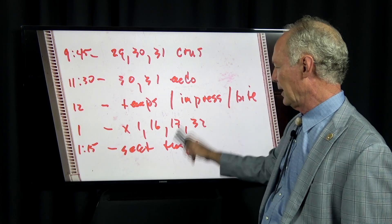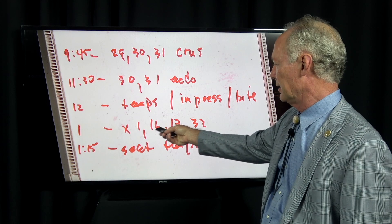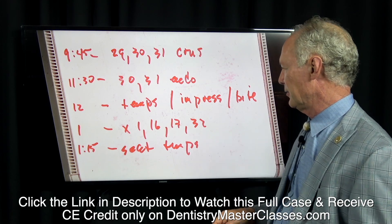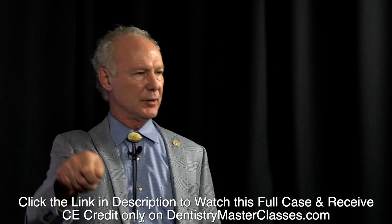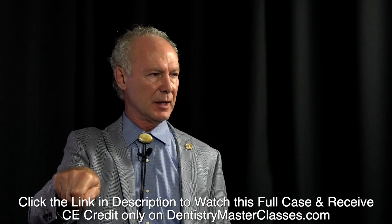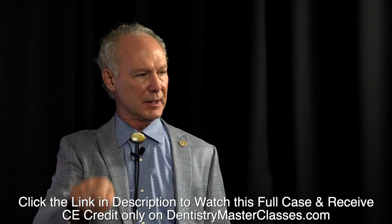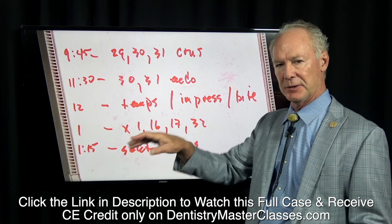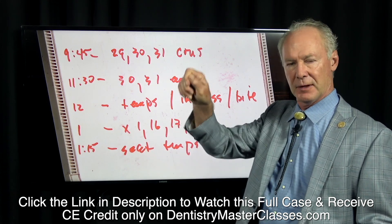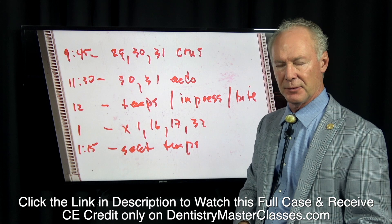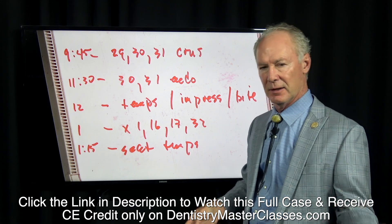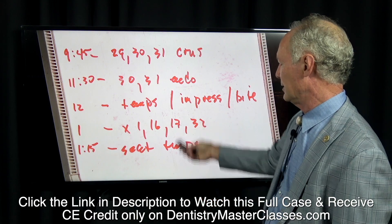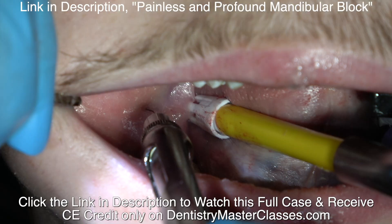Before I seated the temporary crowns, I extracted the four wisdom teeth. The reason for that is if I'm elevating the wisdom teeth and I've got provisional crowns on the second molar, first molar, and second bicuspid, I'll probably loosen the provisionals when I elevate the lower right wisdom tooth. So I didn't seat the provisional crowns until I had extracted the wisdom teeth.